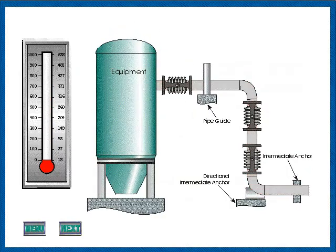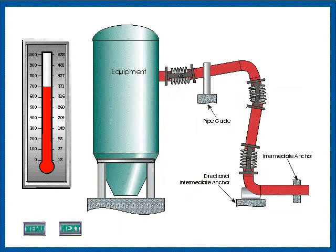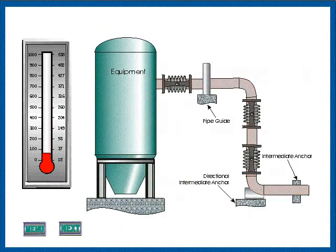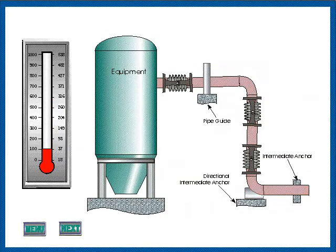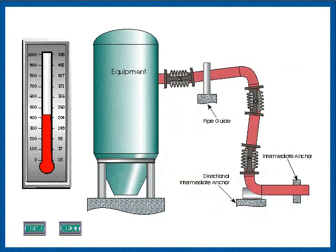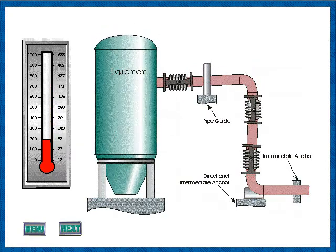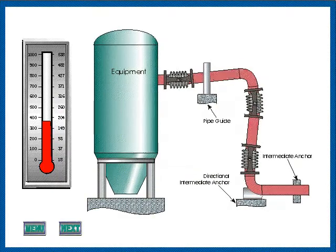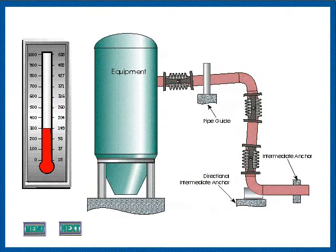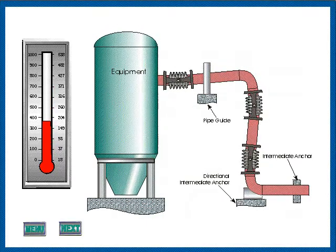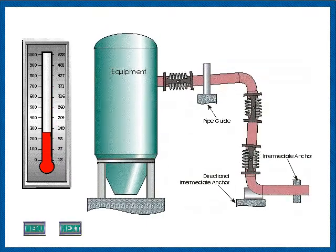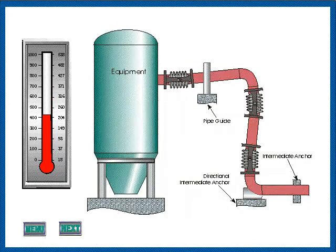A hinged expansion joint system may be used effectively in applications involving movement other than the pure thermal growth of piping. This animation illustrates an application combining the thermal expansion of a piping system with the single plane movements of a piece of connected equipment. So long as all movements are restricted to a single plane, the behavior of the expansion joint system is quite similar to that of the system shown in the dual or universal lateral expansion joint animation.